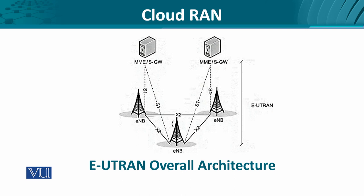Here we have an entity called Node-B and later E-Node-B, which provides RAN connectivity to the user equipment. These E-Node-Bs form a mesh amongst themselves using the X2 interface, and using the S1 interface, or the star interface, they get connected to the serving gateway or the mobility management entity.